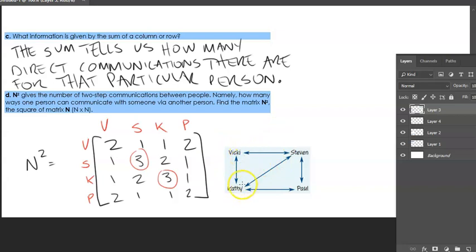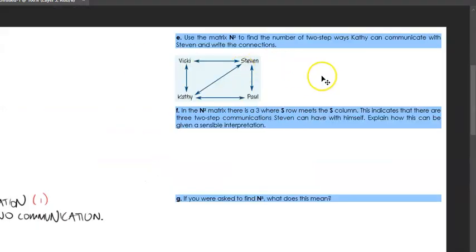Three-step communication will mean that you will go from one person and then to another person and then to another person. So there's three steps within that process. For question E, we're going to use the matrix N-squared to find the number of two-step ways Kathy can communicate with Stephen and write these connections. So from Kathy to Stephen, there are two ways. The first way is to go from Kathy to Vicky to Stephen, or we can go from Kathy to Paul to Stephen.